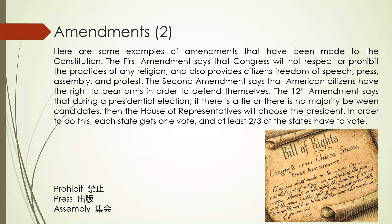Here are some examples of amendments that have been made to the Constitution. The First Amendment says that Congress will not respect or prohibit the practices of any religion, and also provides citizens freedom of speech, press, assembly, and protests. The Second Amendment says that American citizens have the right to bear arms in order to defend themselves. The Twelfth Amendment says that during a presidential election, if there is a tie or there is no majority between candidates, then the House of Representatives will choose the president. In order to do this, each state gets one vote, and at least two-thirds of the states have to vote.